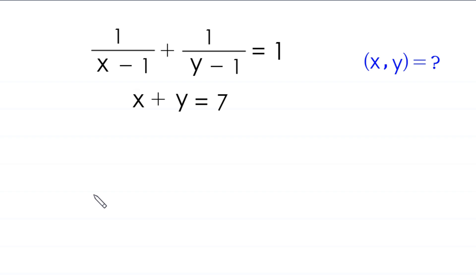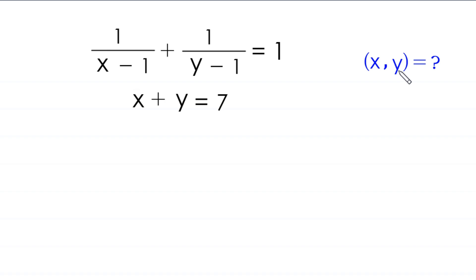Hello everyone, welcome. We will solve this system: 1 over (x minus 1) plus 1 over (y minus 1) equals 1, and x plus y equals 7. Our job is to find all possible values of x and y. Let's start — we'll call the first expression Equation 1 and the second Equation 2.